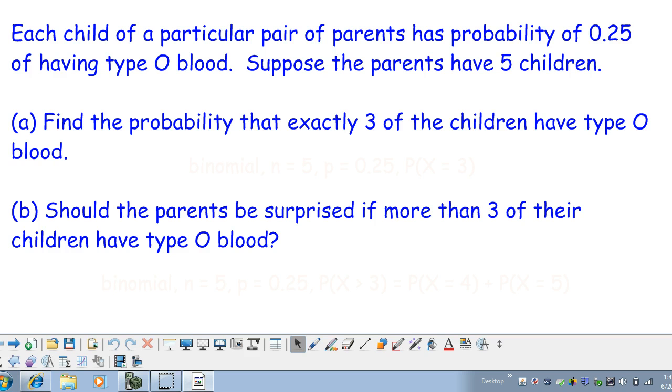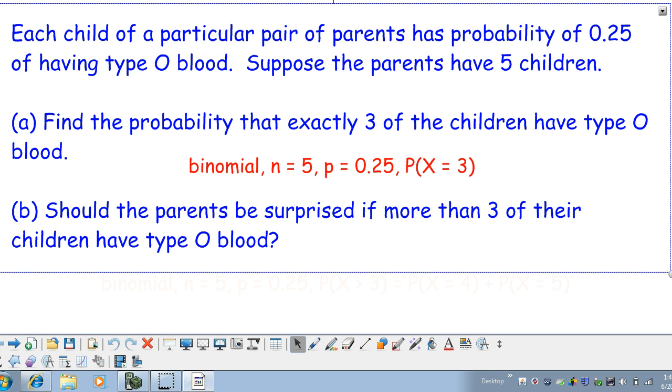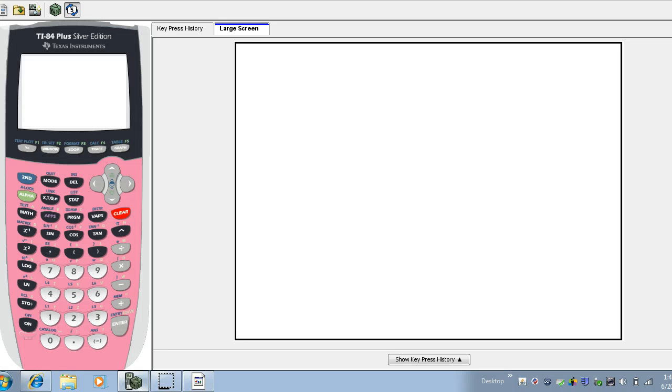Our first question is to find the probability that exactly three of the children have type O blood. First of all, this is a binomial situation with exactly five trials. The probability of success is the same from trial to trial at 0.25, and we're looking for exactly three successes.